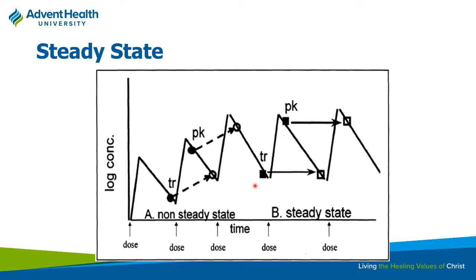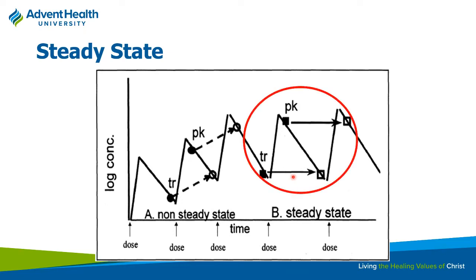A common clinical error is ordering a vancomycin level after the very next dose instead of waiting for steady state. Ordering a trough too early looks falsely low, prompting unnecessary dose increases. You really have to wait for the drug to reach steady state. Ordering 'vancomycin one gram, pharmacy to dose' is common in hospitals where pharmacy helps manage dosing, but you need to understand these principles yourself.